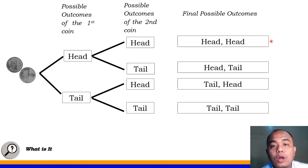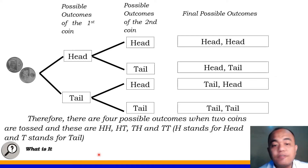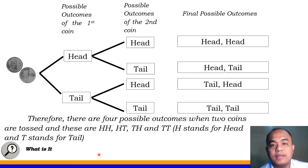This are all the possible outcomes in tossing two coins. How many possible outcomes do we have? We have four possible outcomes. Yung possible outcomes na yan na nakuha natin, ang tawag natin dyan ay sample space. Therefore, there are four possible outcomes when two coins are tossed and these are head and head, head and tail, tail and head, and tail and tail. Take note, H here stands for head and T here stands for tail. I hope you understand already what this diagram means. This could be found also on your module.